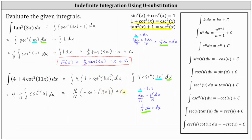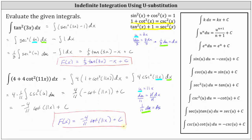Simplifying one last time, we have negative 4 elevenths cotangent 11x plus c as the indefinite integral or antiderivative. Let's label this big F of x. I hope you found this helpful.